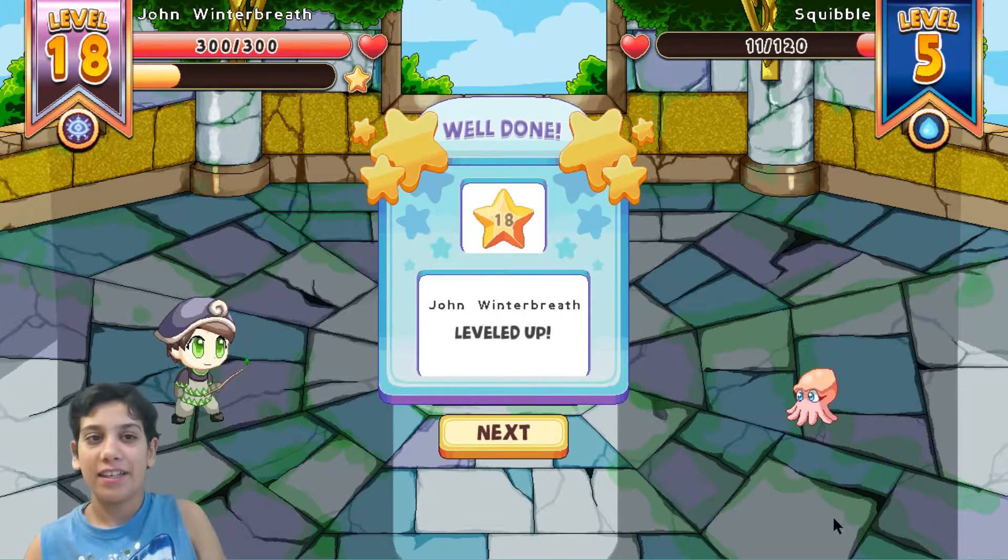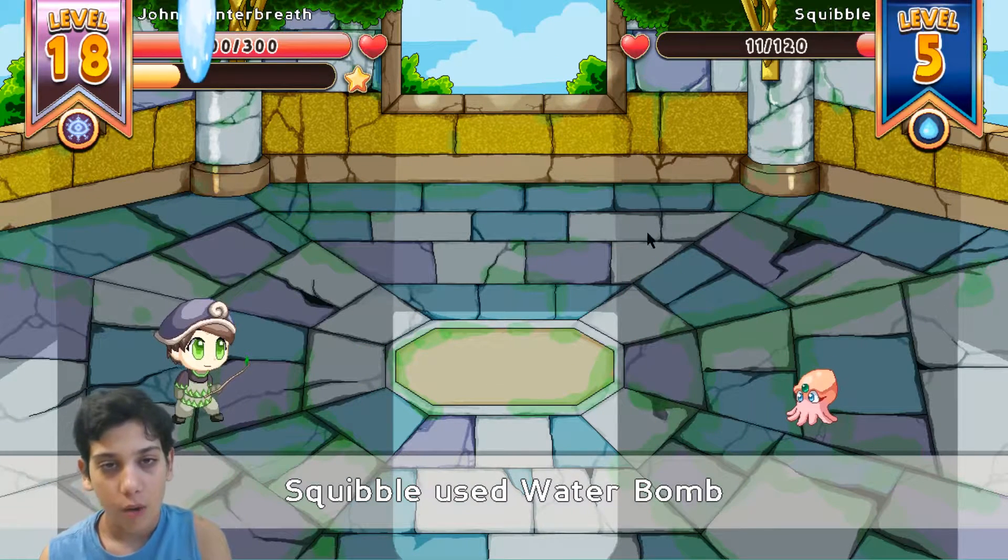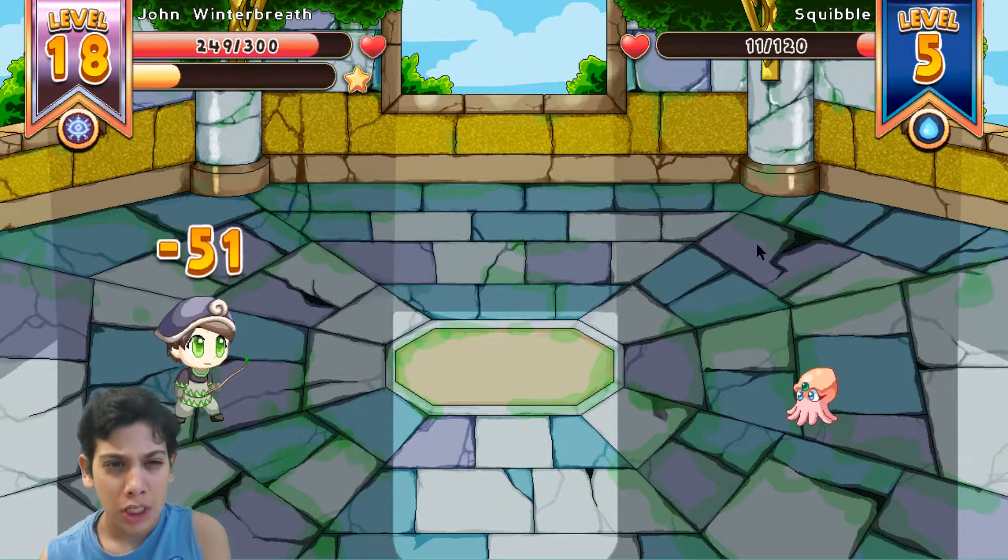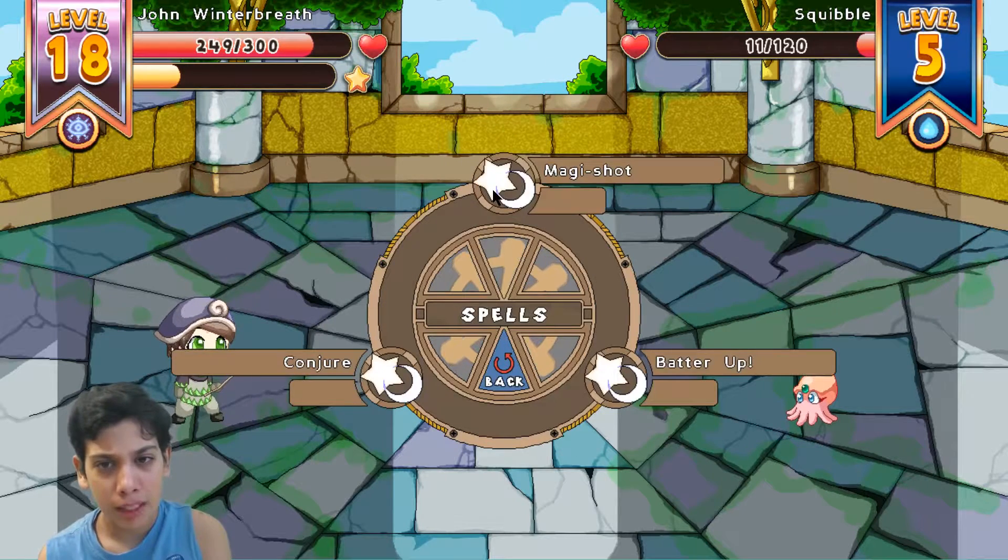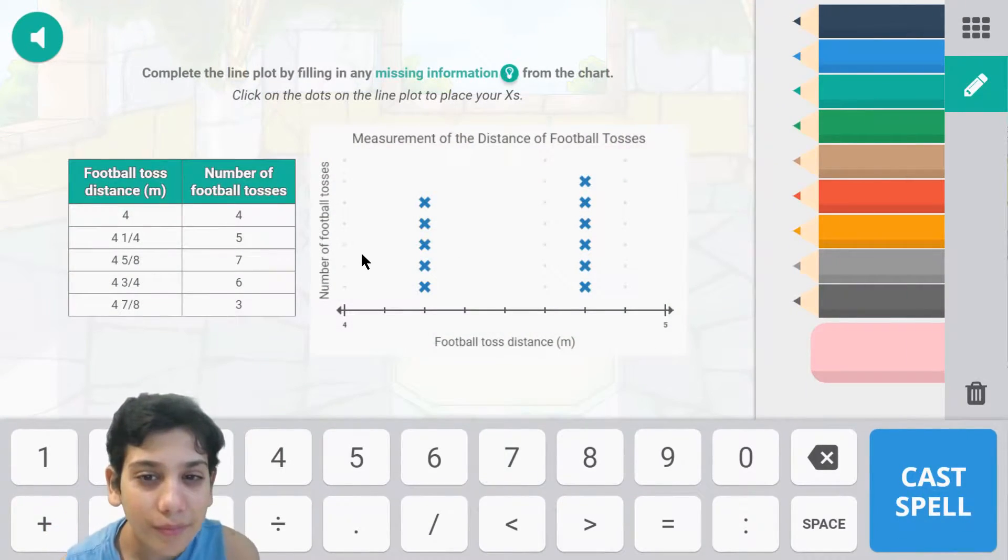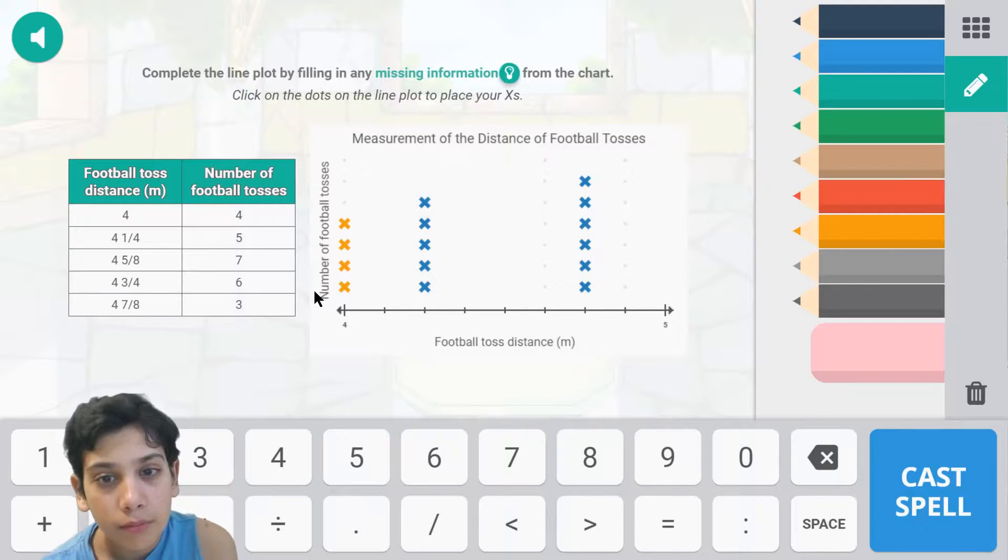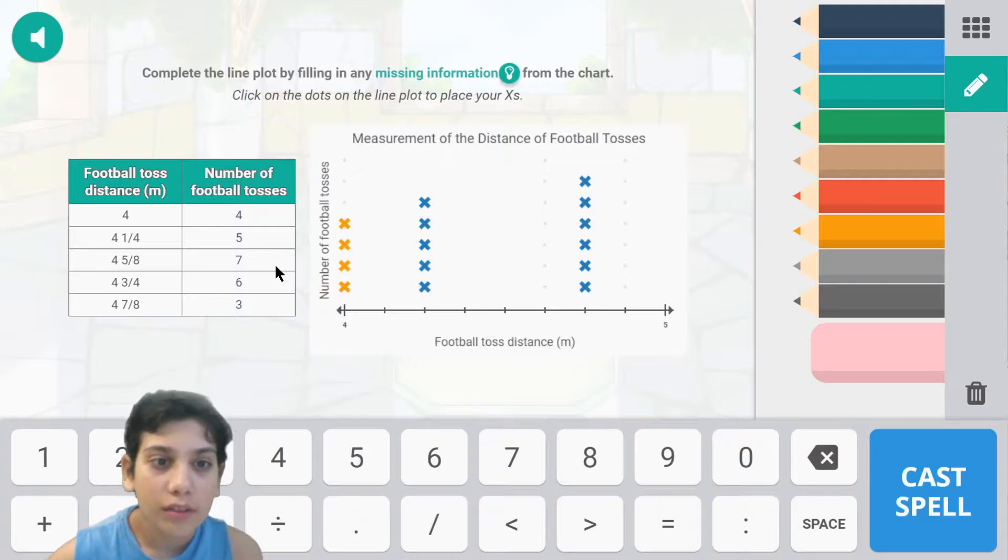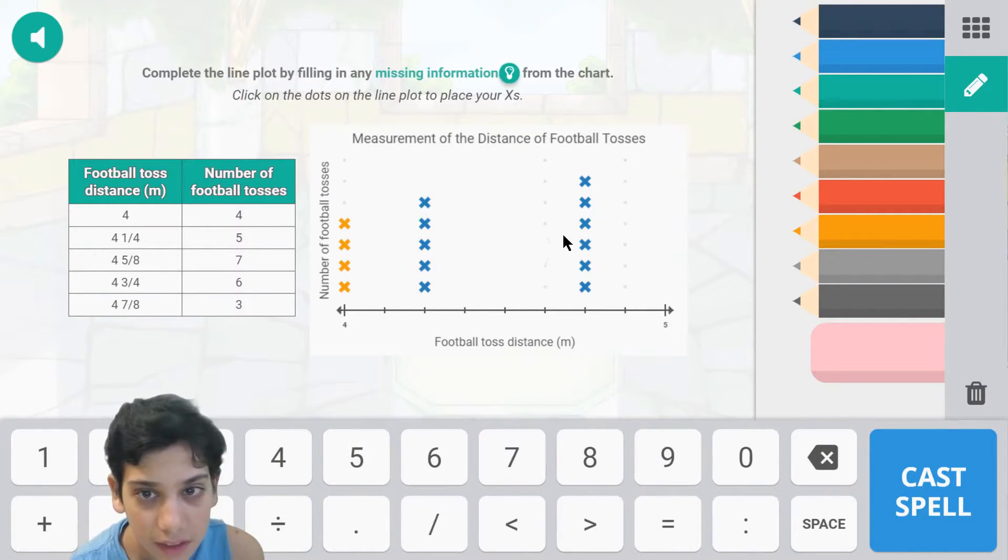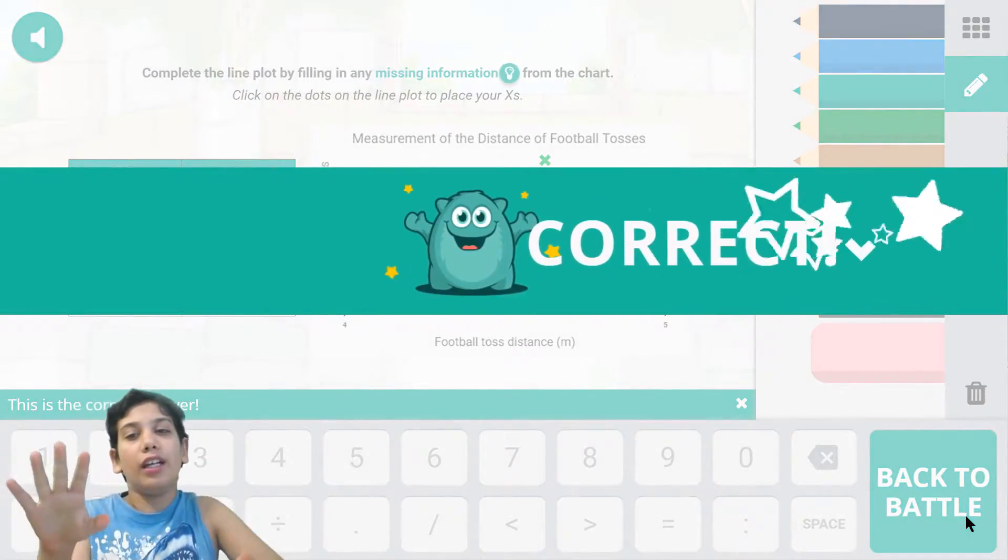Water bomb. Four has four ticks so that's right there, one two three four. Four and five eighths has seven ticks so that's up there. Four and seven eighths has three ticks which is right there. And viola correct!